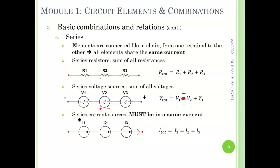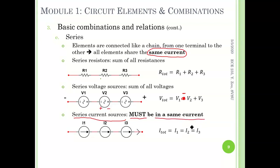Next is the series current source. This is actually a tricky connection. Since I1 through I3 are series connected, they should have exactly the same current. Therefore, if you connect them together, they must have the same current; otherwise, it makes no sense. If I1 does not equal I2, not equal I3, you'd be introducing three different current values, which is impossible.